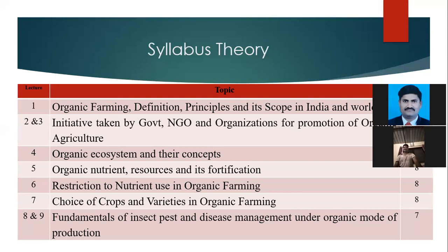Another topic is the restrictions on nutrients used in organic farms, with about 8% weightage. This covers the amount of inputs that are naturally formed or synthetically formed — which are restricted, prohibited, or permitted. Restricted inputs are those you generally cannot apply, but may be applied at 5% or 10% under permission conditions.